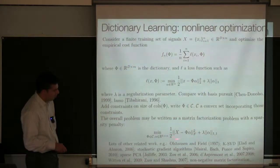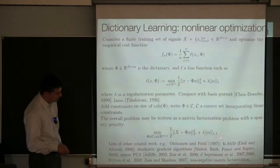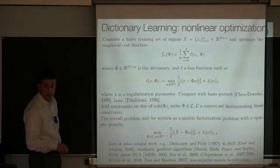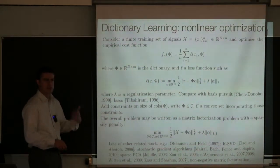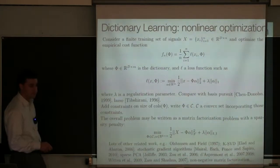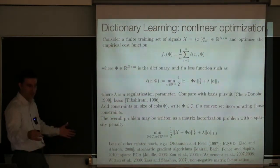So you want to approximate all data points well by some linear combination of dictionary elements, and you want the sparsity of the coefficients. This 1,1 norm — not quite standard notation — is simply the sum of absolute values of the matrix of coefficients. If this is small, if lots of coefficients are small in absolute value, it's really the one-norm of alpha thought of as a vector.